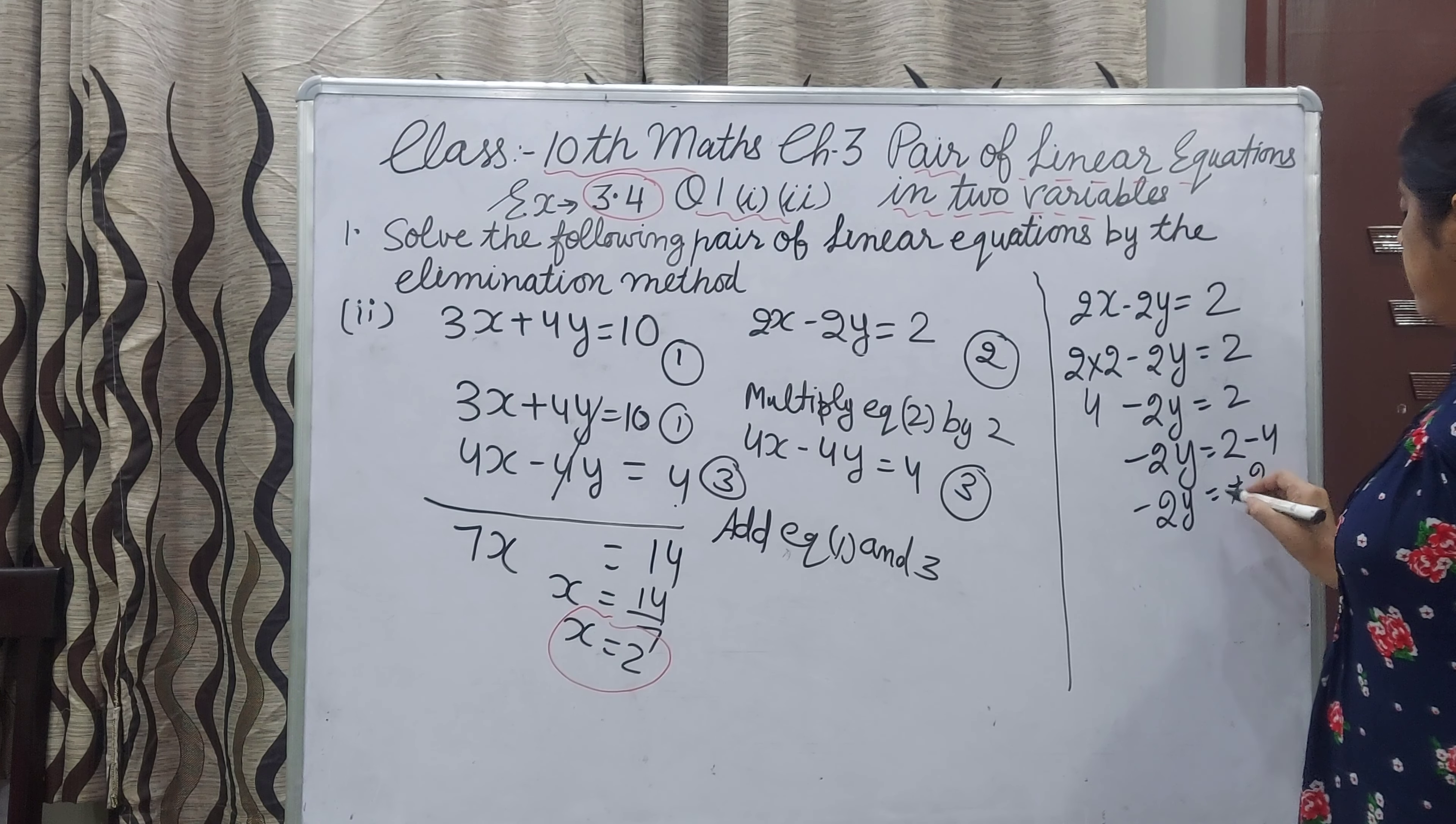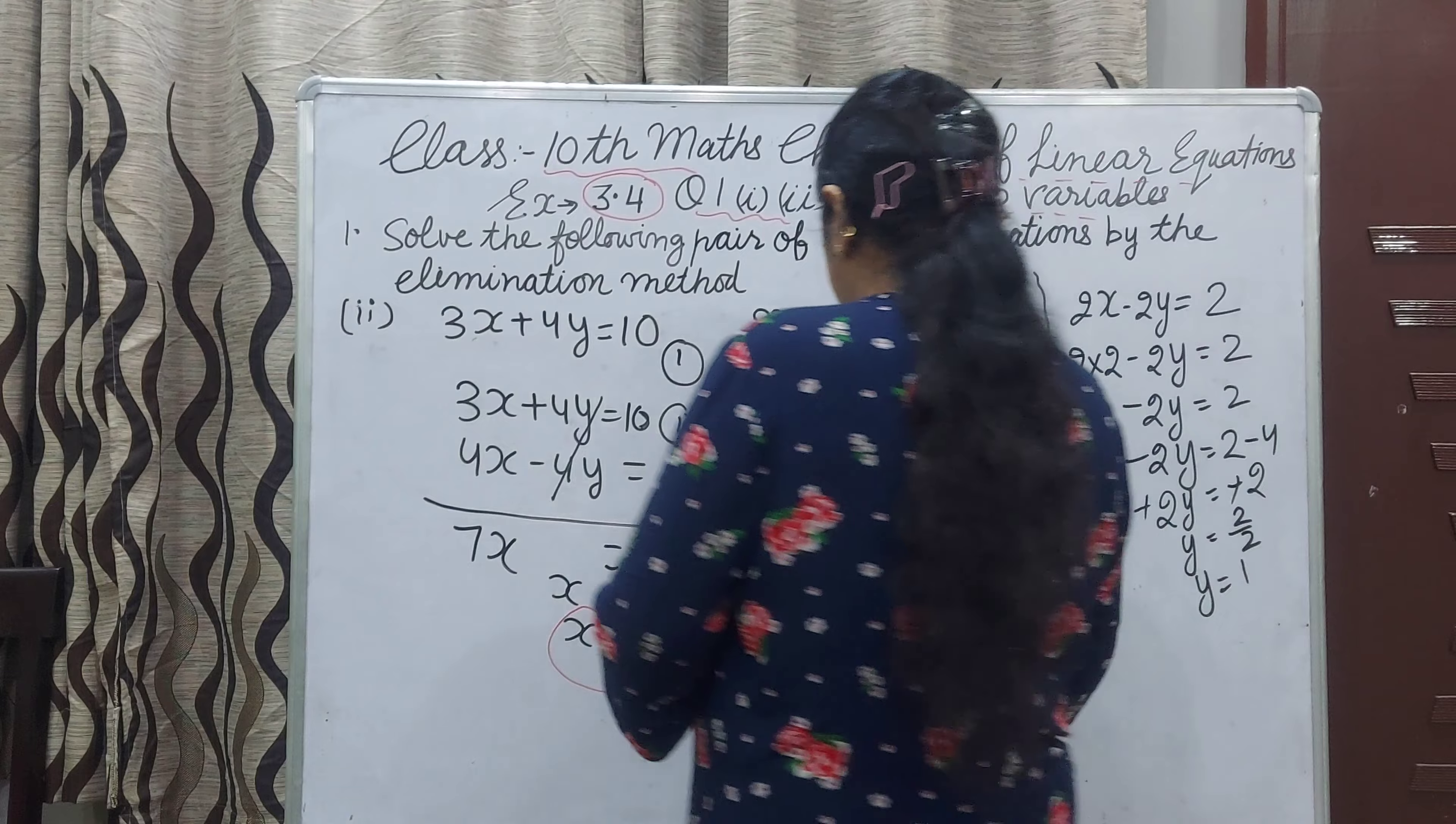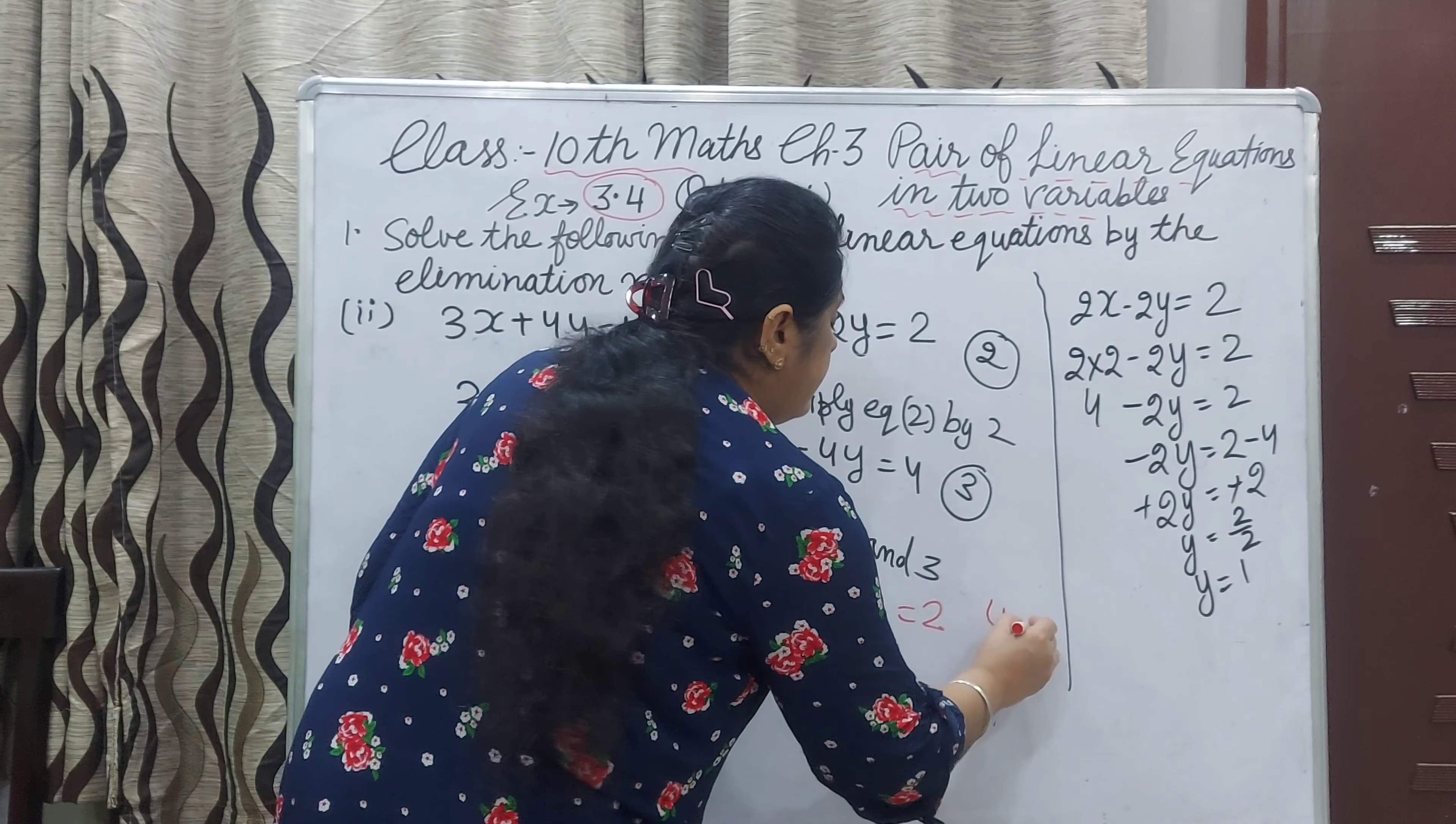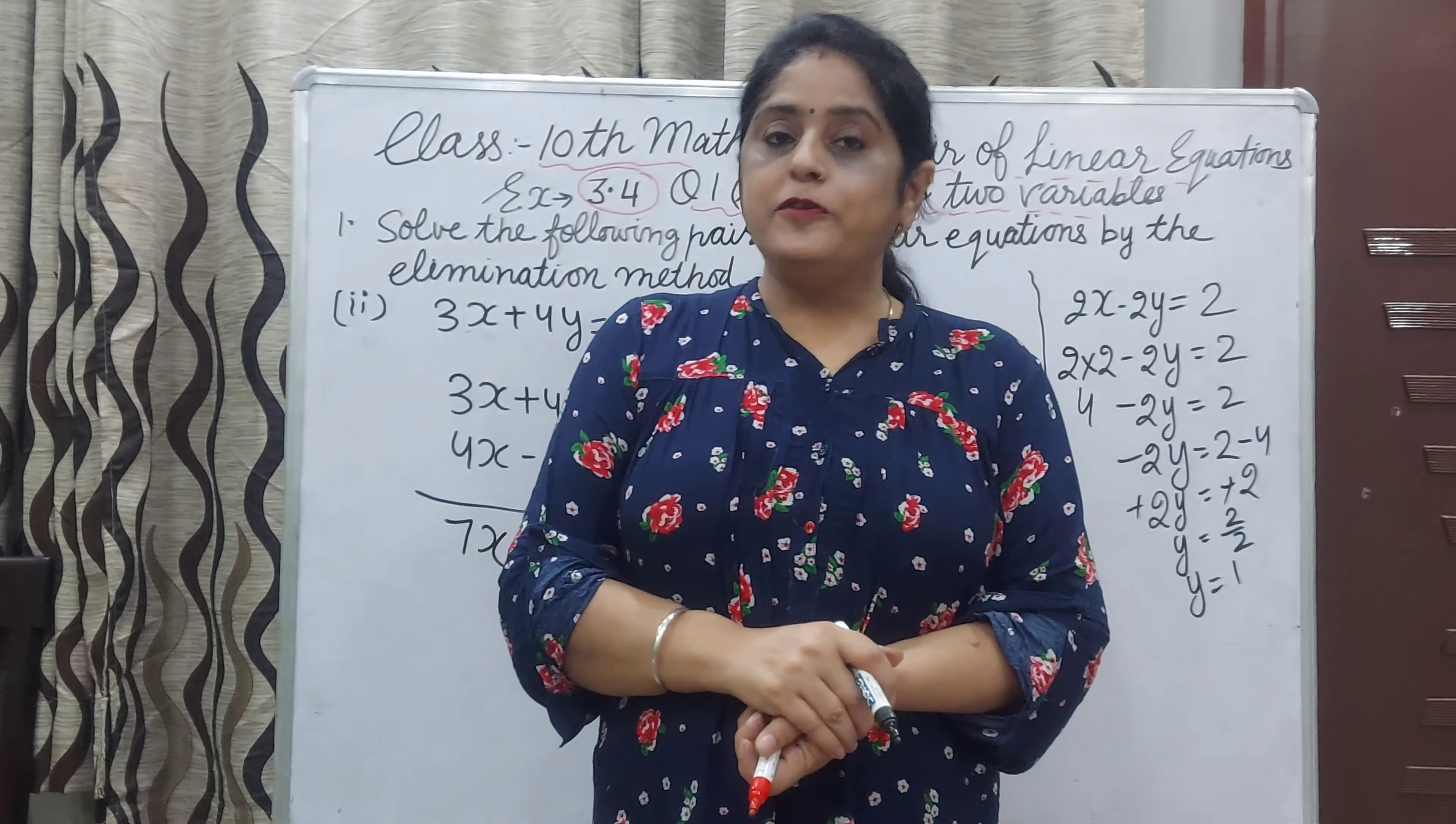Minus and minus will be cancelled. Y equal to 2 upon 2. Y value you will get 1. Now our answer is x is 2 and y is 1. That is your answer for x and y. Hope you understood, and thanks for watching.